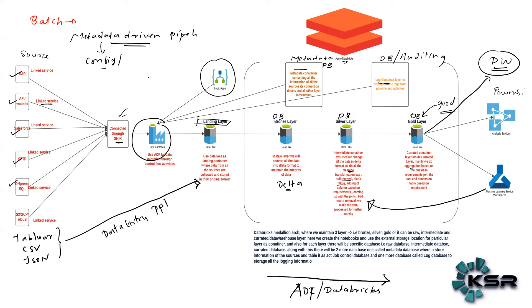Here's how you can explain your project: 'Our main aim was to create a centralized data repository. The client had data scattered across various sources. We collected that data and created a landing layer where we brought all the data as-is without any changes. Then we implemented medallion architecture — in the bronze layer we converted all data into delta format. In the silver layer we did all cleaning and transformation activities like removing nulls, filling blanks, and adding business-required columns. Then in the gold layer we created dimension and fact tables based on business aggregations. A Power BI team used this layer to build dashboards and reports.'